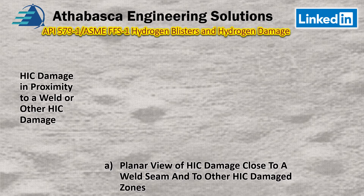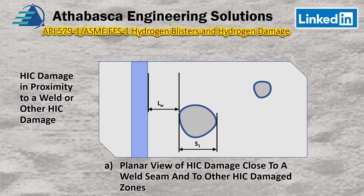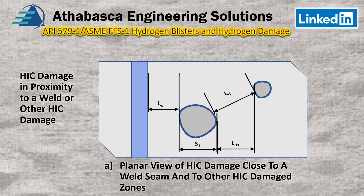We look at hydrogen damage in proximity to a weld or other HIC damage. Particularly, we're going to look at a planar view of HIC damage close to a weld seam and how it's related to other HIC damage zones. When doing an investigation, a number of components are needed to make a description. Typically, you get the distance from your flaw to the edge of the weld, because you're trying to evaluate the HIC in the HAZ, and then you get the dimensions of that. We look at the proximity of one flaw to the next, and then characterize those into planes to get the orientation.